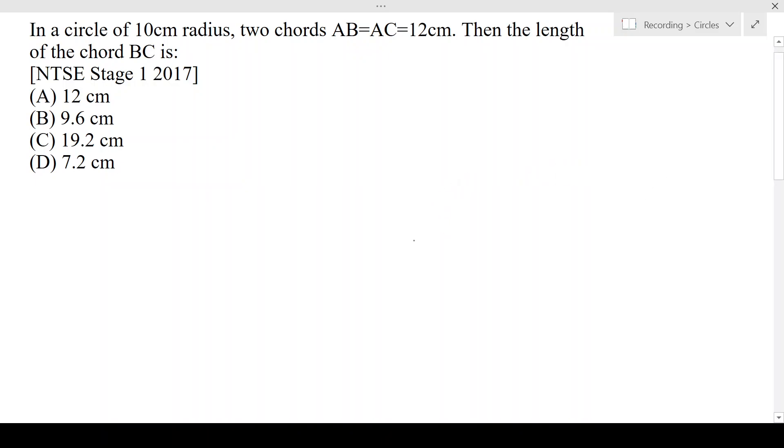Hello everyone, now we are going to solve a question from NTSE Stage 1, 2017. The question is: in a circle of 10 cm radius, two chords AB equals AC equals 12 cm. Then the length of the chord BC is what?